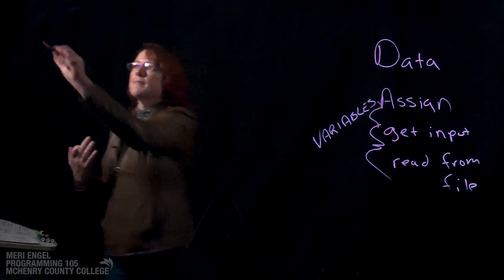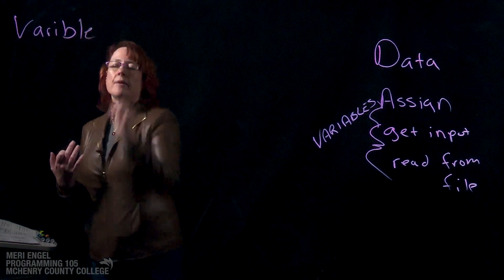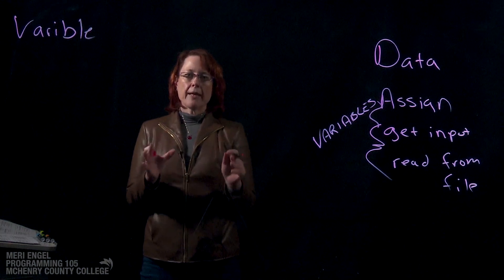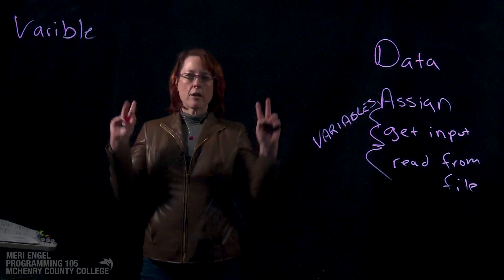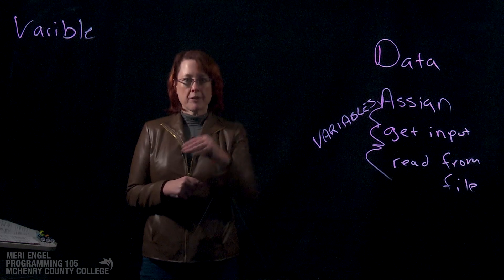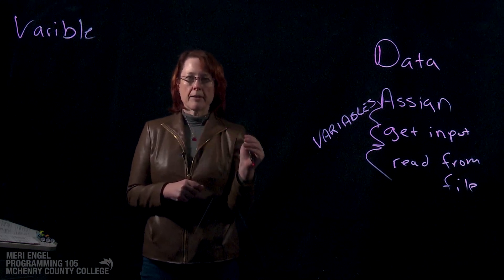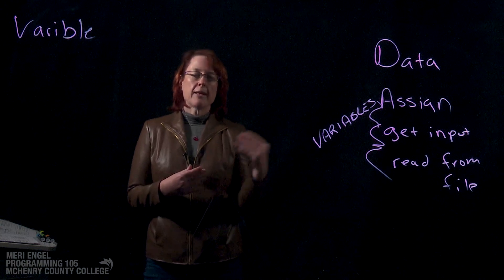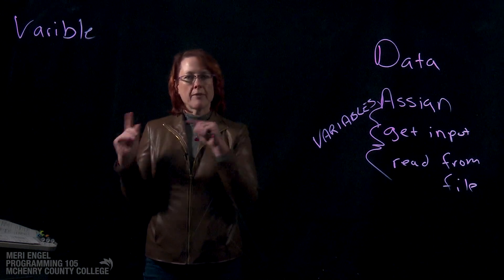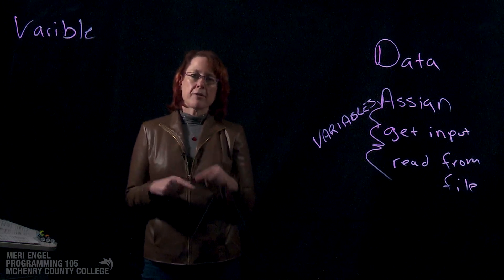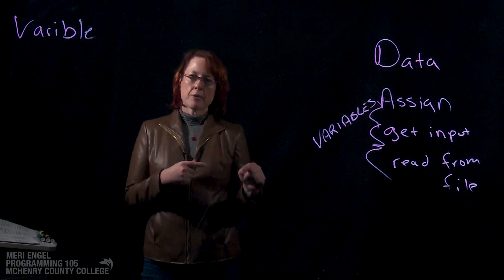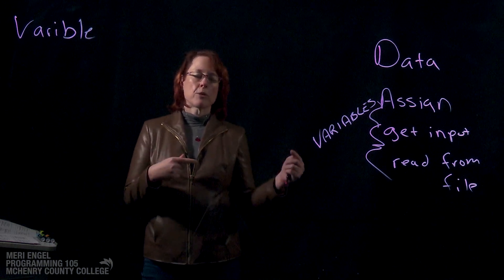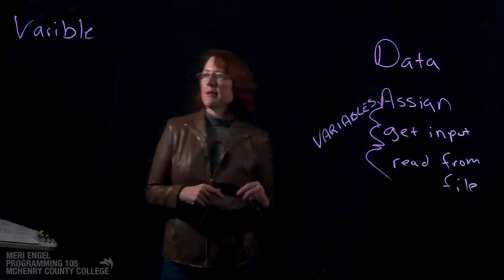When we create a variable, it's going to hold different types of data. In Python, we use three primary types of data. Python is a loosely typed language, which means we just create a variable and store stuff in it — Python knows what kind of variable it is by what we put in it. Some programming languages like Java or C++ require you to tell the computer what type the variable will hold, which helps avoid errors like trying to add text values together.